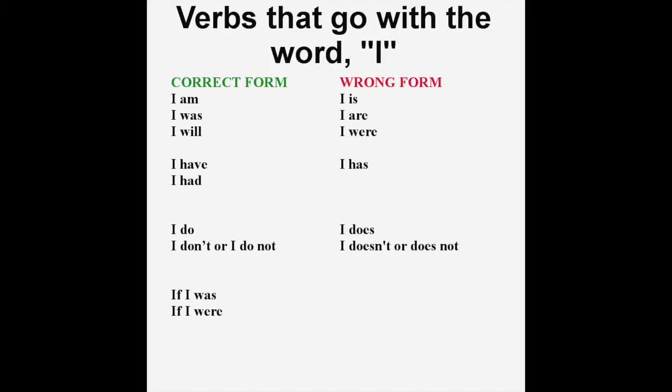The correct forms are: I am, I was, I will, I have, I had, I do, and I don't.